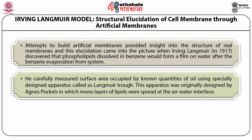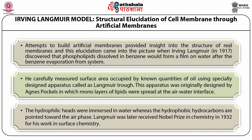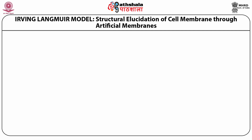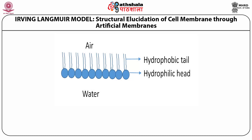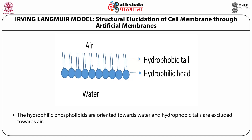He carefully measured the surface area occupied by known quantities of oil using a specially designed apparatus called the Langmuir trough, originally designed by Agnes Pockels, in which monolayers of lipids were spread at the water-air interface. The hydrophilic heads were immersed in water, whereas the hydrophobic hydrocarbons pointed out towards the air phase. Langmuir later received the Nobel Prize in Chemistry in 1932 for his work in surface chemistry. This figure shows the structural elucidation of cell membrane through artificial membrane synthesis, where hydrophilic phospholipids are oriented towards water surfaces while the hydrophobic tails are excluded towards air.